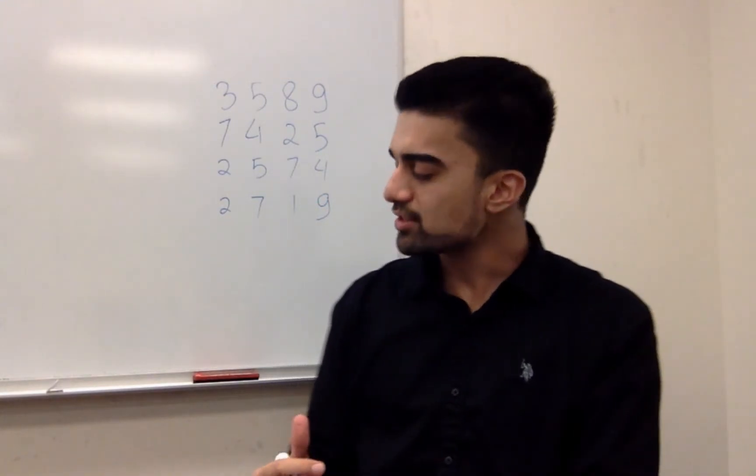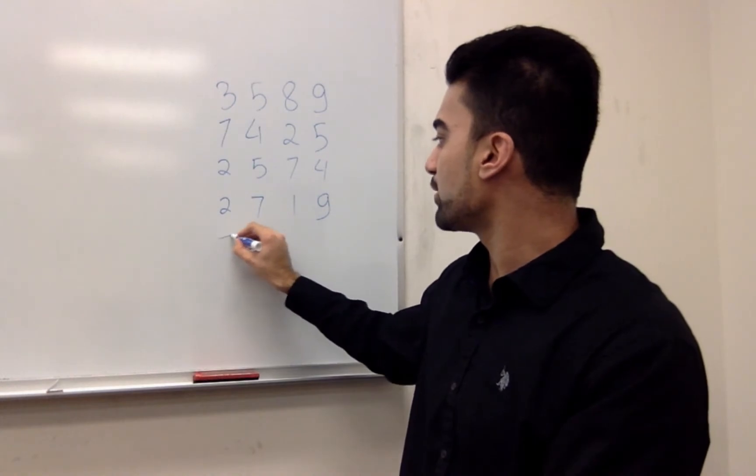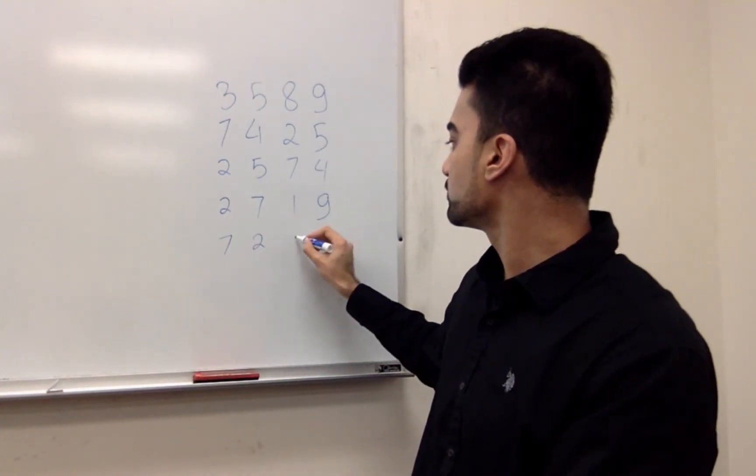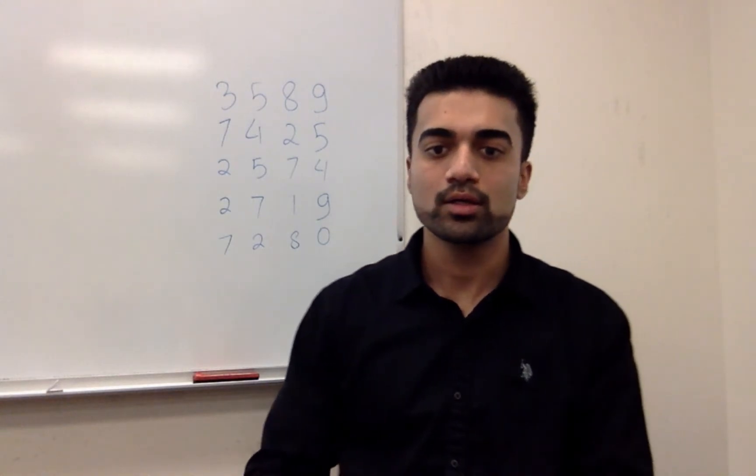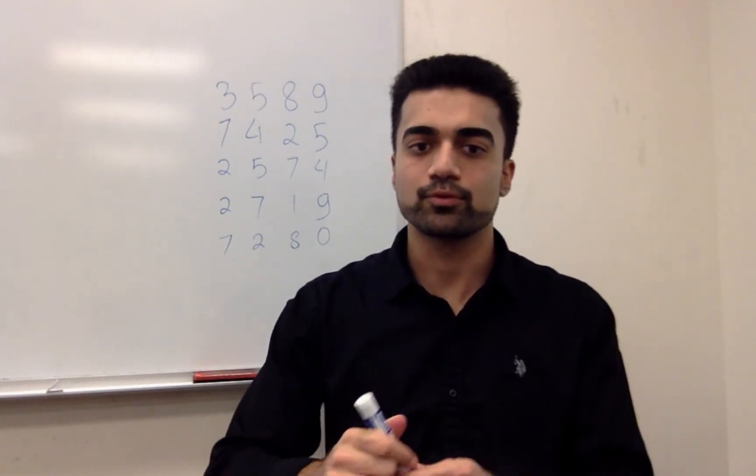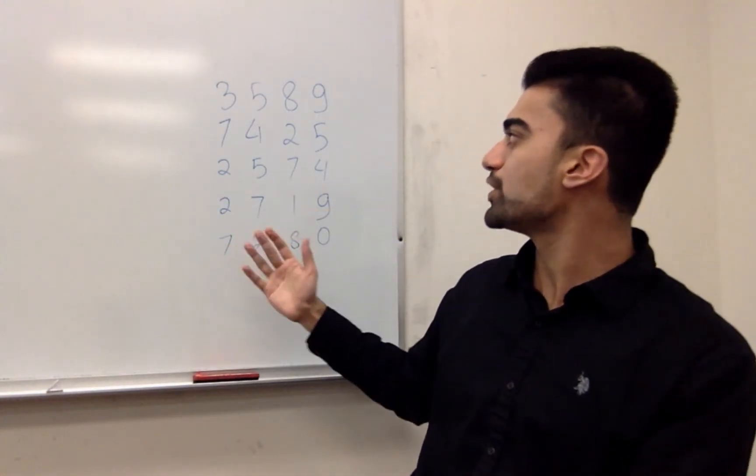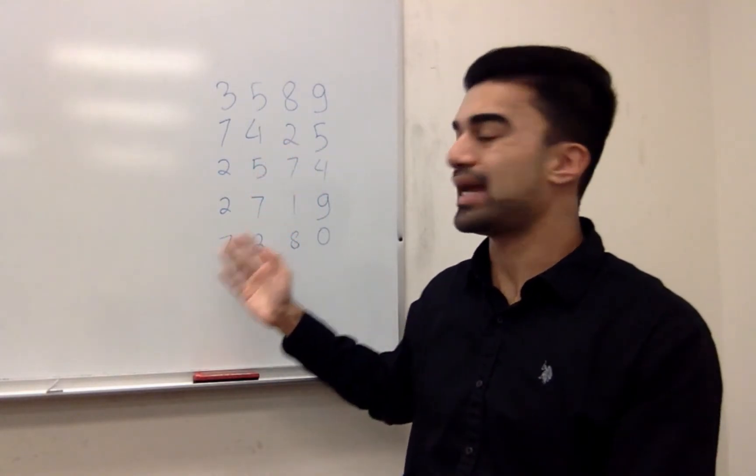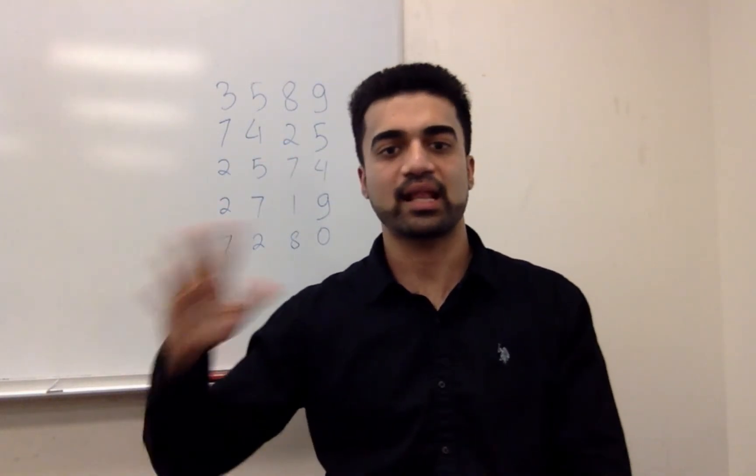So it's my turn again. So let me just put 7280. So until now, we just have five four-digit numbers randomly selected. Right?